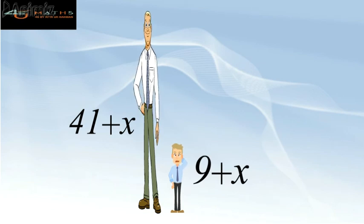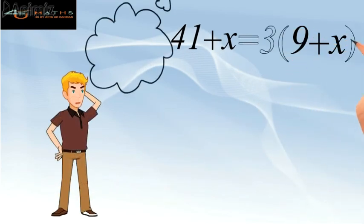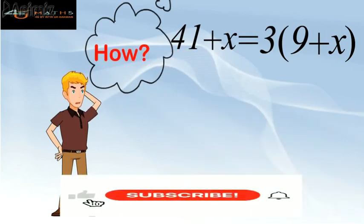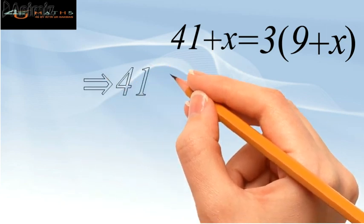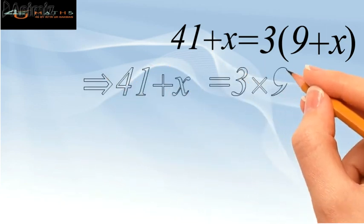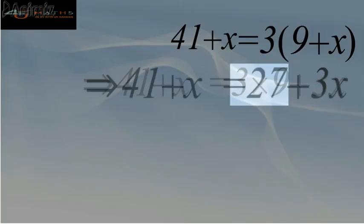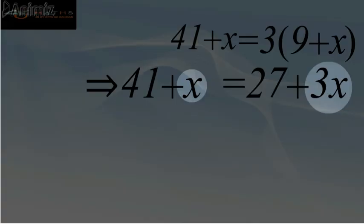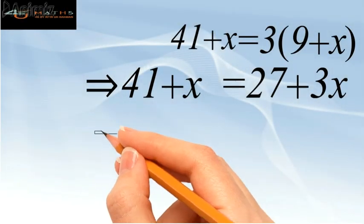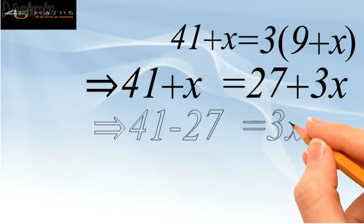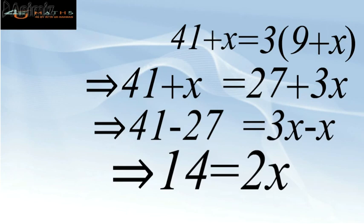Now utilizing this condition, we get 41 plus x equal to 3 times (9 plus x). Applying the distributive property, this becomes 41 plus x equal to 3 times 9 plus 3 times x, and clearly 3 times 9 gives 27. So we transfer like quantities: x and 3x to one side, and 41 and 27 to the other side. Thus 41 minus 27 gives 14, while 3x minus x gives 2x.